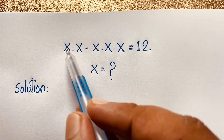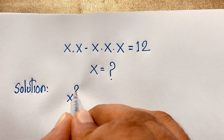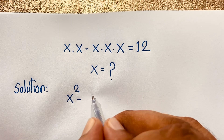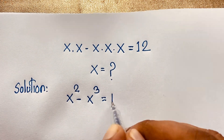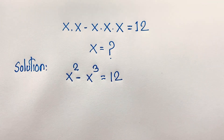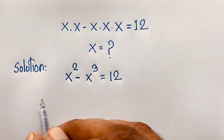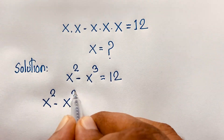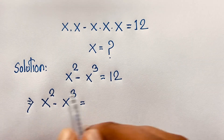Our question here: x times x will be x to the power 2, minus x times x times x will be x to the power 3, is equal to 12. I will solve this question step by step using an easy method. So x squared minus x cubed is equal to 12.